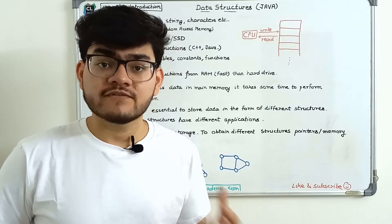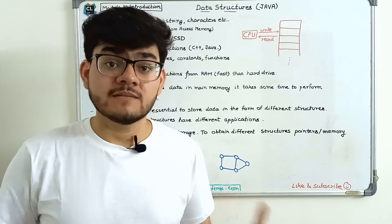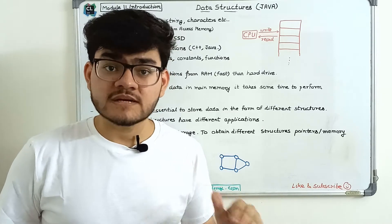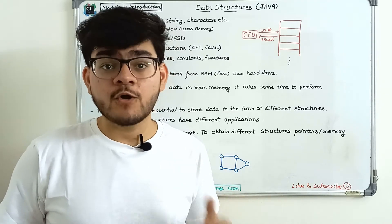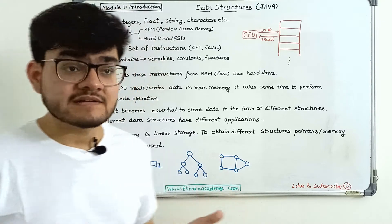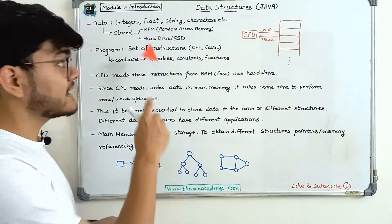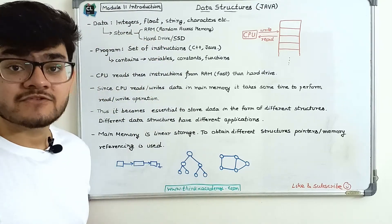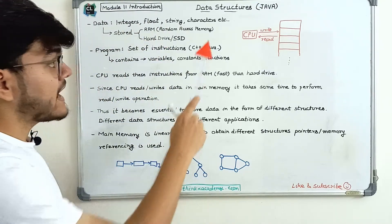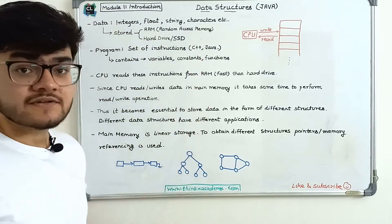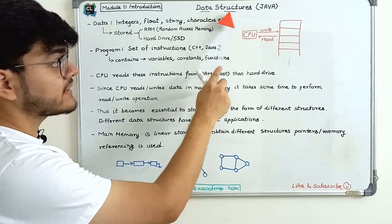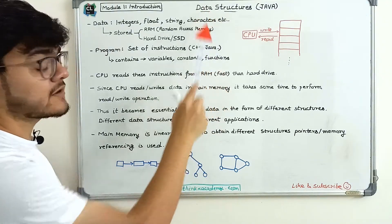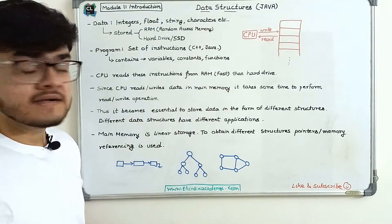Data can be of different types — it can be images, text — but on the fundamental level, they are all bits and they are all integers. They can be float, they can be string, they can be characters. Since we are studying about data structures, it is important to understand what data is.